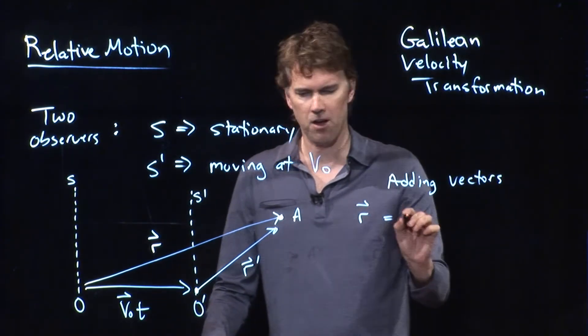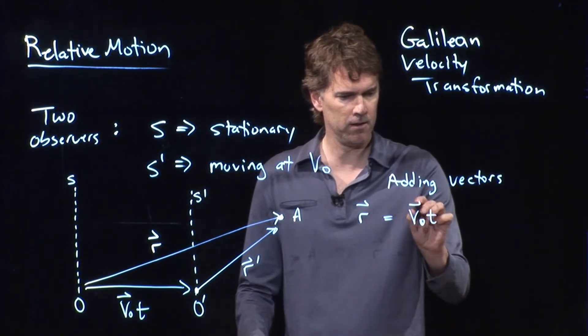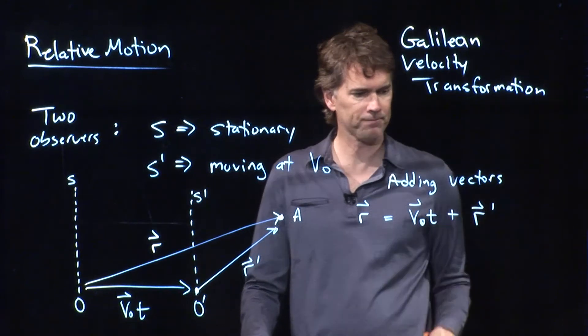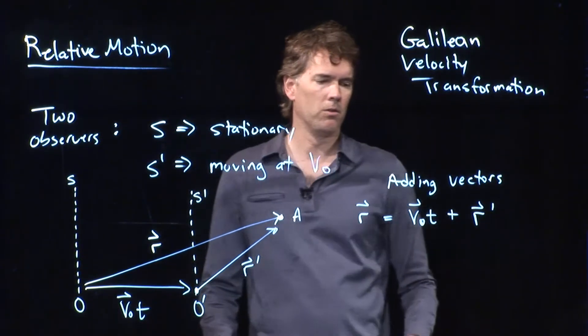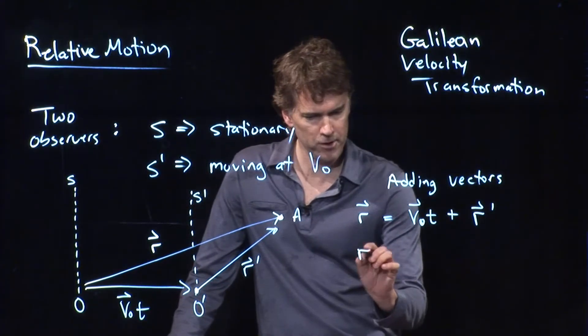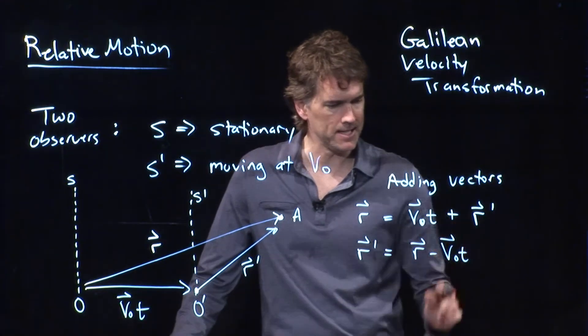R is just the sum of V-naught T plus R prime. And now you can rewrite this for R prime if you're interested. R prime equals R minus V-naught T.